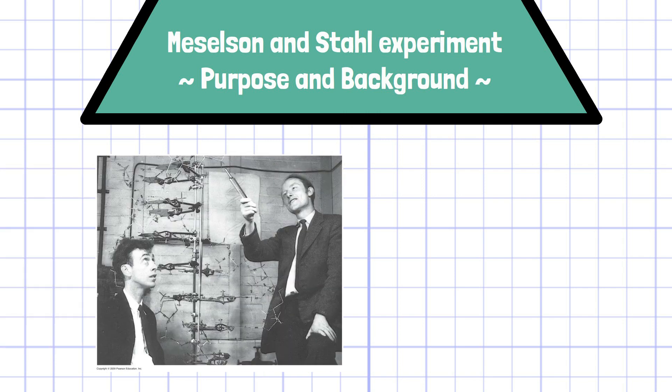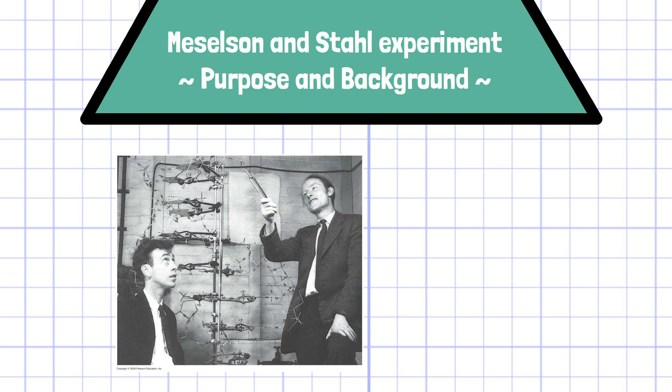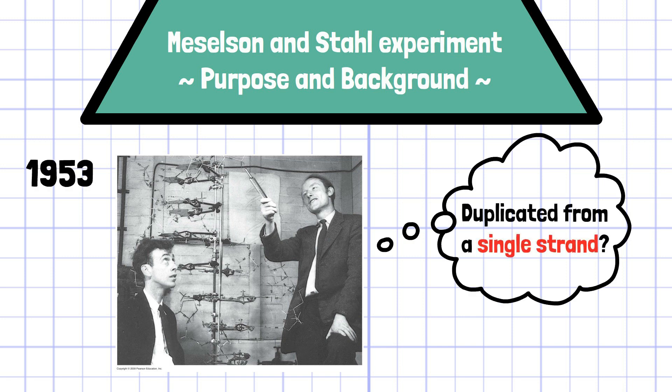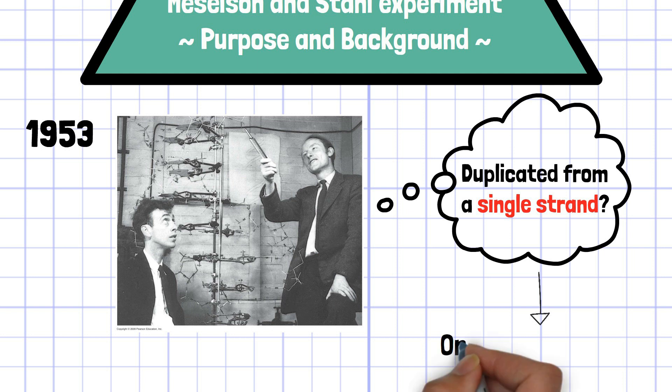During the time when Watson and Crick discovered the DNA double helix structure in 1953, it was also implied from the structure that the DNA strands are duplicated from a single strand template. However, it was only a hypothesis without experimental background.